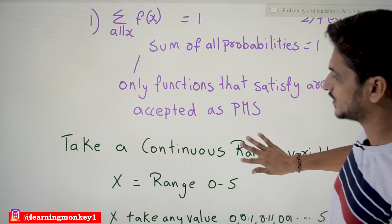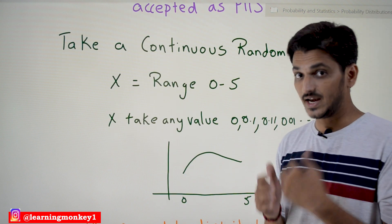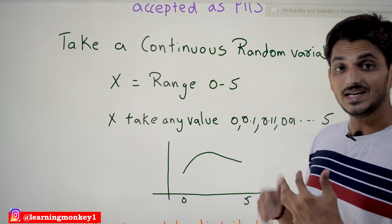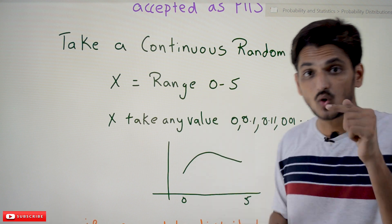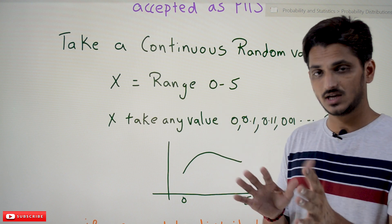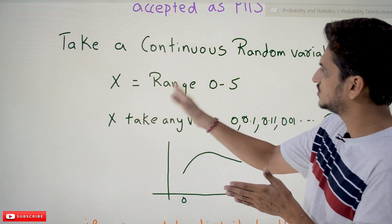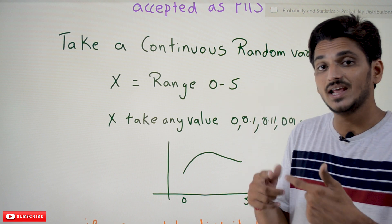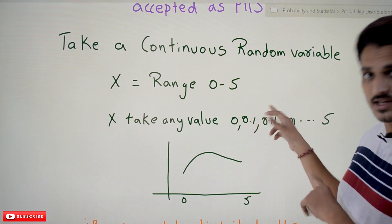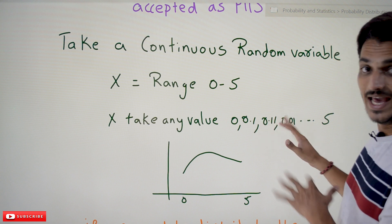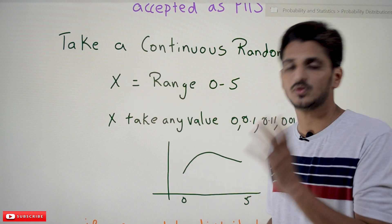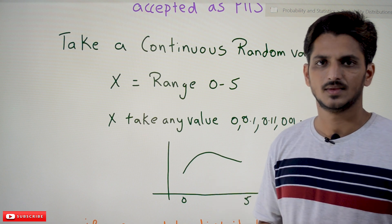Now coming to the continuous probability distribution. Suppose you take a random variable X whose range is from 0 to 5. In continuous probability distribution, X can take any value in this range — that is what continuous means. In discrete probability distribution, X can only take some specific values like 0, 1, 2, 3, 4, 5. But in continuous, X can take 0, 0.1, 0.01, 0.11 — any value between 0 and 5. These types of random variables we call continuous random variables.